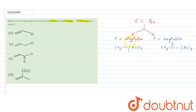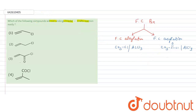Let's look at the options and try to solve this. The options include: option A is vinyl chloride, option B is allylic chloride, and option C is a carbonyl compound. Let's examine the mechanism of the Friedel-Crafts reaction.